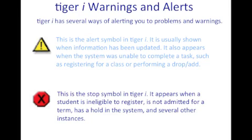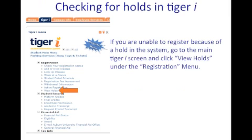These are a couple of symbols that alert you of different things. If you see one of these and can't figure out what to do, your advisor or the registrar's office can help you out. If you can't register because the system says that you have a hold, you can go back to the Tiger Eye tab and click the View Holds link, and an advisor will help you fix the problem.